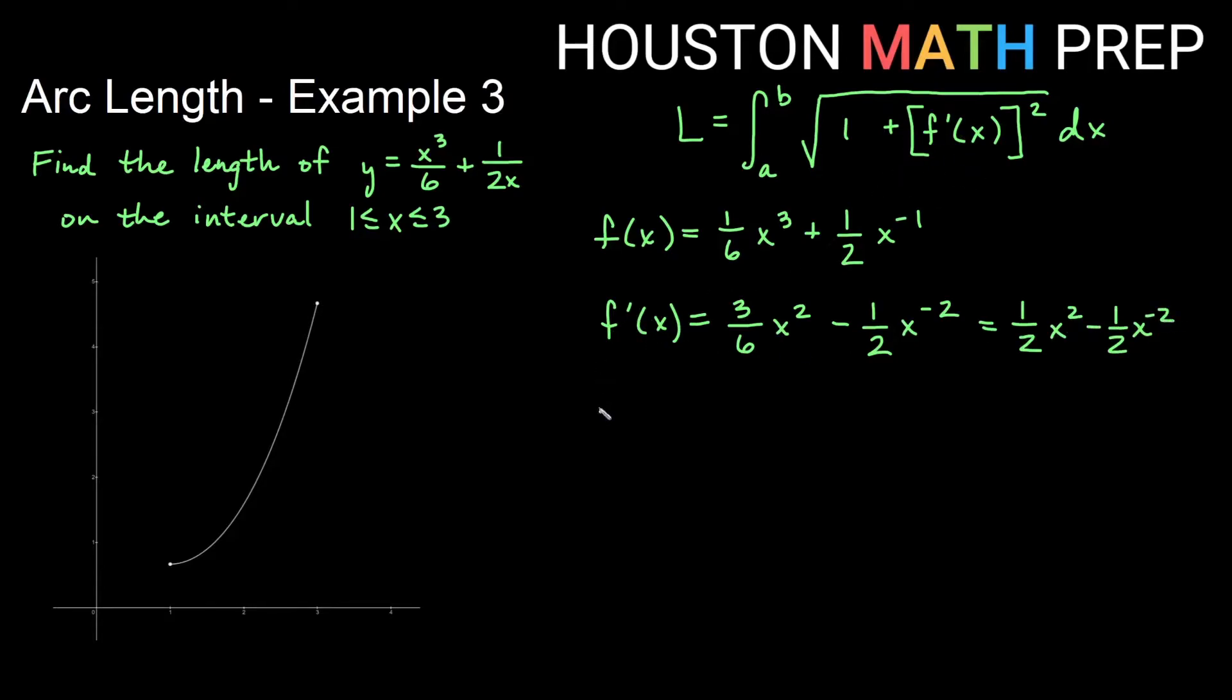Now we'll need to square it for part of our formula here. So f prime of x squared. If we do this one, I'm going to write out two copies before I do this. So that would be one half x squared minus one half x to the negative two times itself. And if you need to do this to see how it distributes, that's fine. Certainly do that.